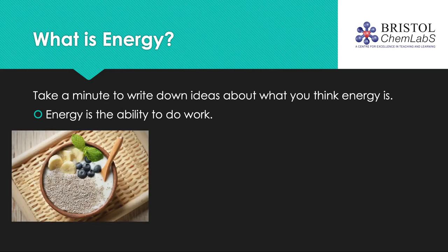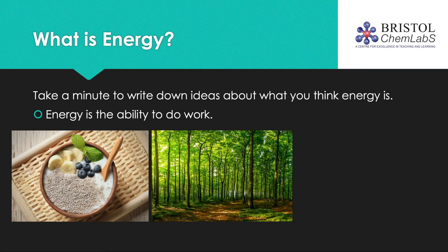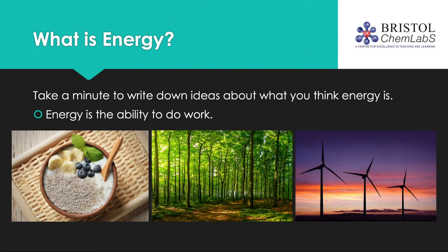Food: the process of digesting food releases energy. That energy release then allows us to do work by, for example, playing a game of tennis or learning new chemistry concepts. Trees and plants: you will already know that trees and plants take in energy from the sun via a process called photosynthesis, allowing a reaction to take place which produces glucose, a sugar that the plant can use for growth. And finally, wind turbines — an example of sustainable energy transformers. The energy from the wind does work to spin the turbine, which transfers energy to the generator, which then converts that energy to electricity.